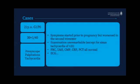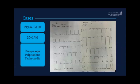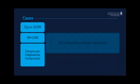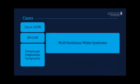Case one, a primigravida whose symptoms started prior to pregnancy and worsened in the second trimester. Exam was unremarkable except for persistent sinus tachycardia around 120. Bloods were all normal, but after some persistence, we finally got an ECG. You can notice the very short PR interval in lead two with that upsloping QRS and in V5 as well. She had Wolff-Parkinson-White.